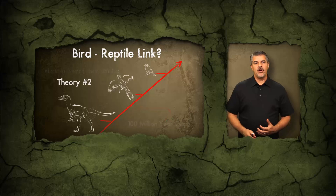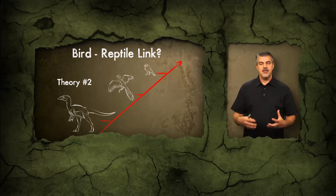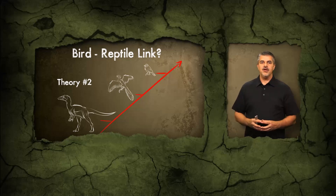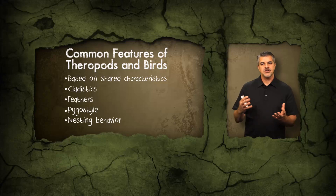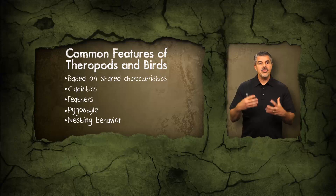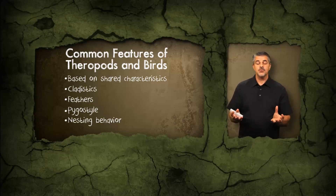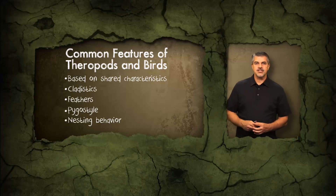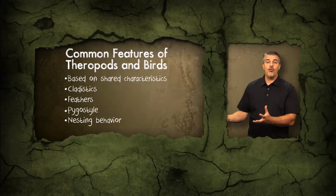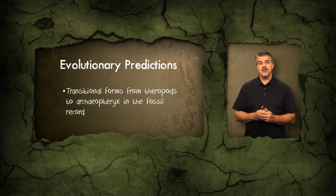In more recent years, scientists have argued that the transitional forms that produced birds would be feathered dinosaurs belonging to a group known as the theropods — bipedal dinosaurs that look like the raptors people are familiar with from Jurassic Park. The argument is that theropod dinosaurs share a number of anatomical characteristics with birds, some appear to possess feathers, and they even nest by laying eggs similarly to birds. So the argument is that these theropod dinosaurs evolved to give rise to birds, and transitional forms in the fossil record should connect theropods to Archaeopteryx at 155 million years ago.